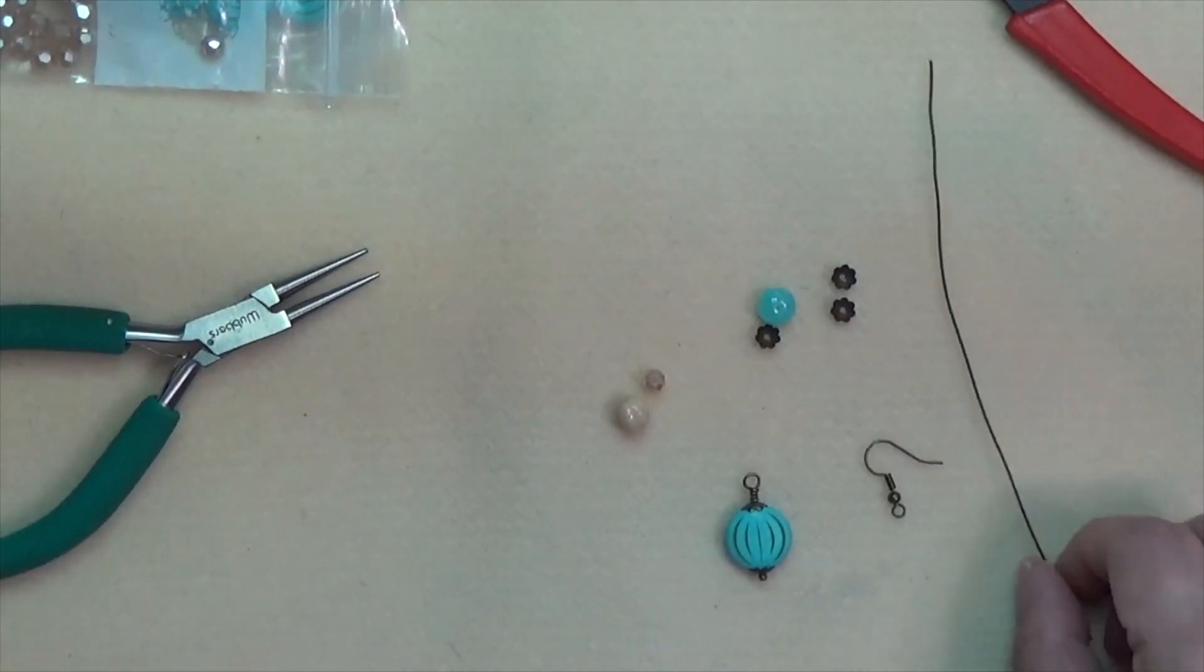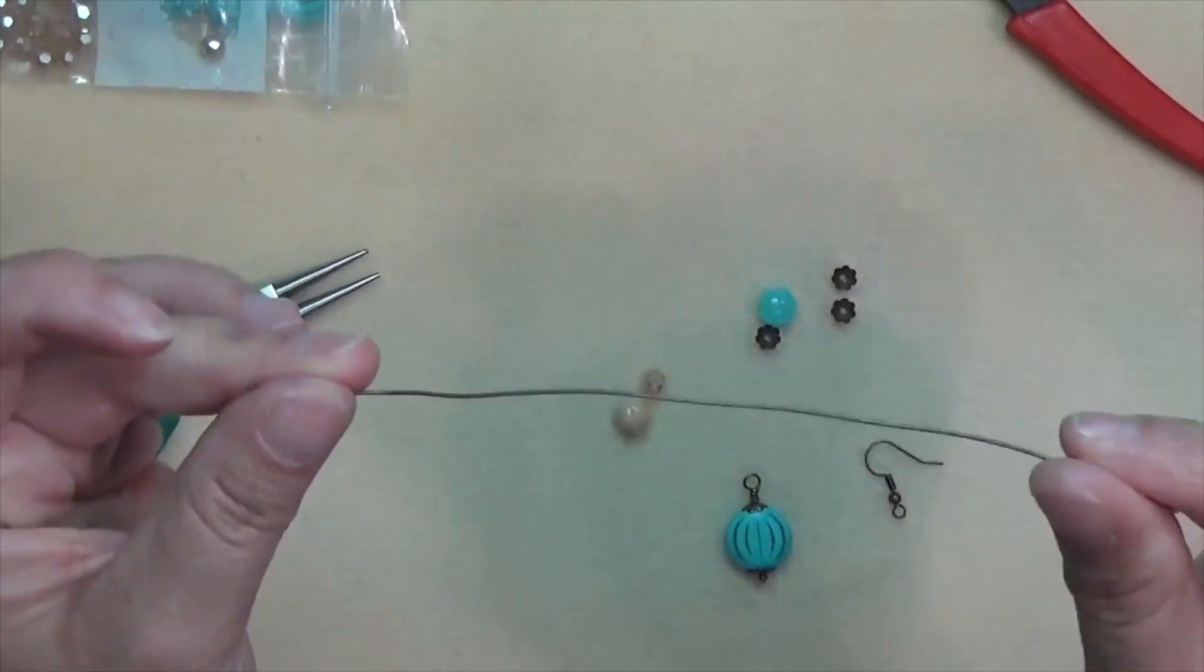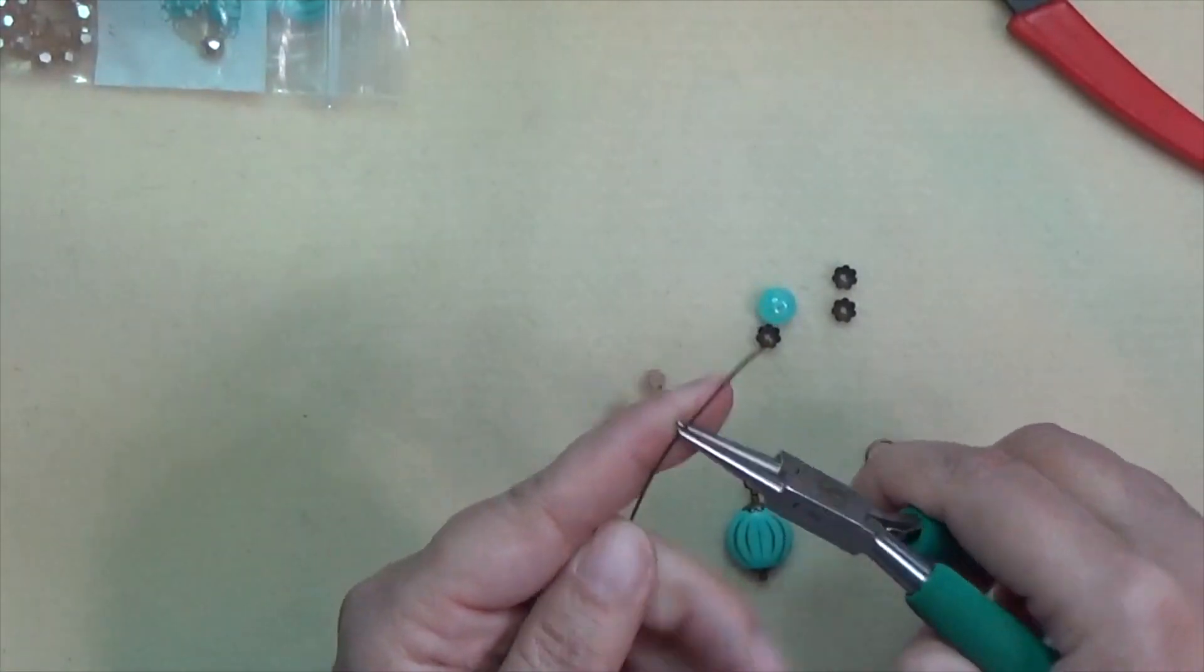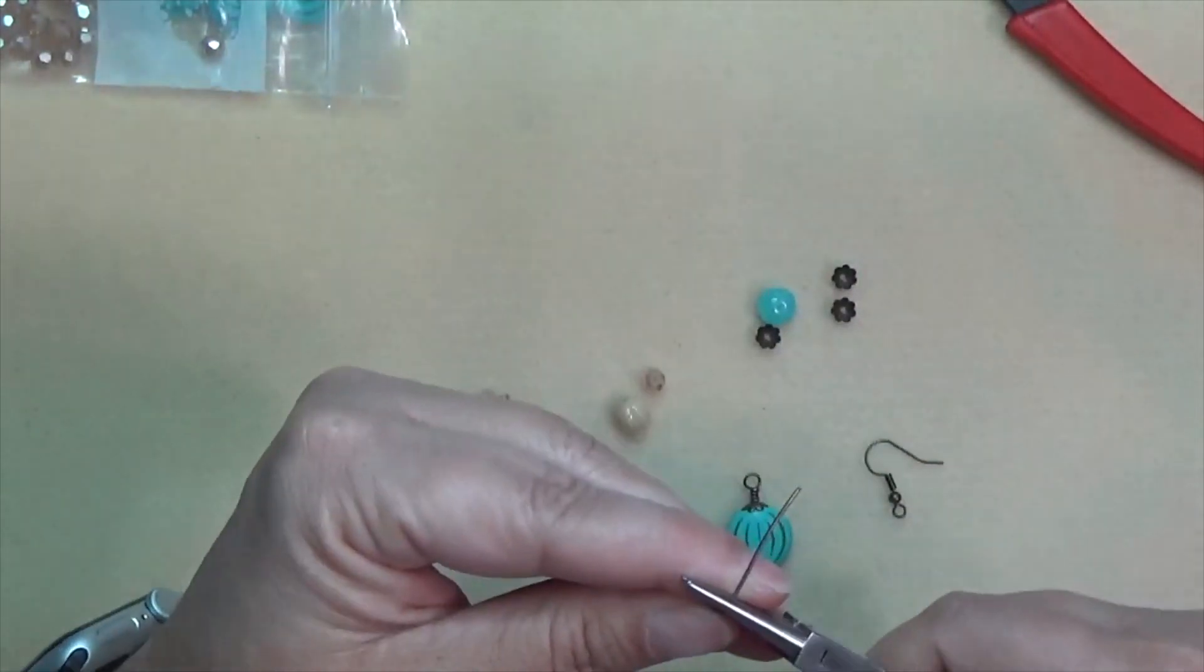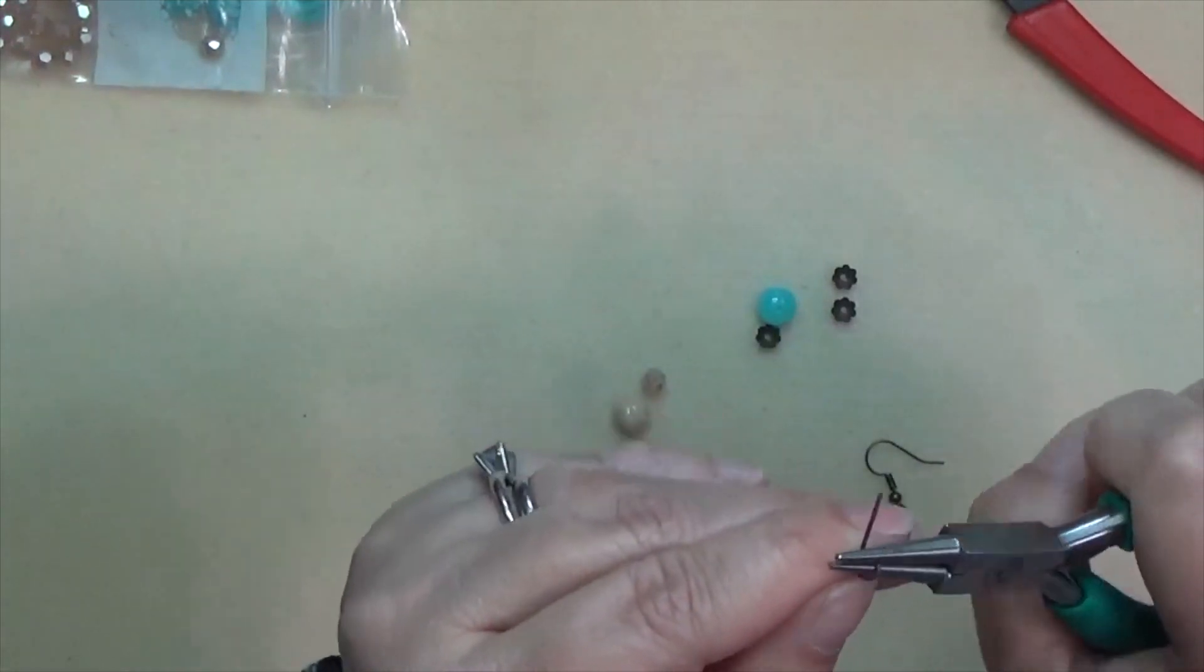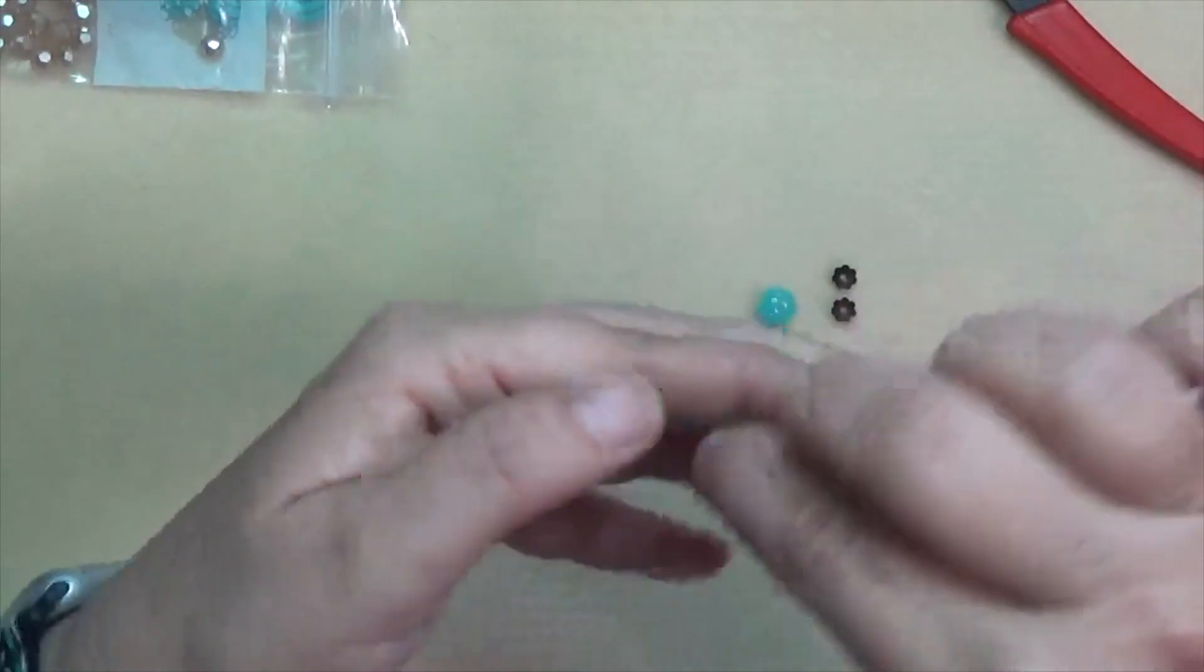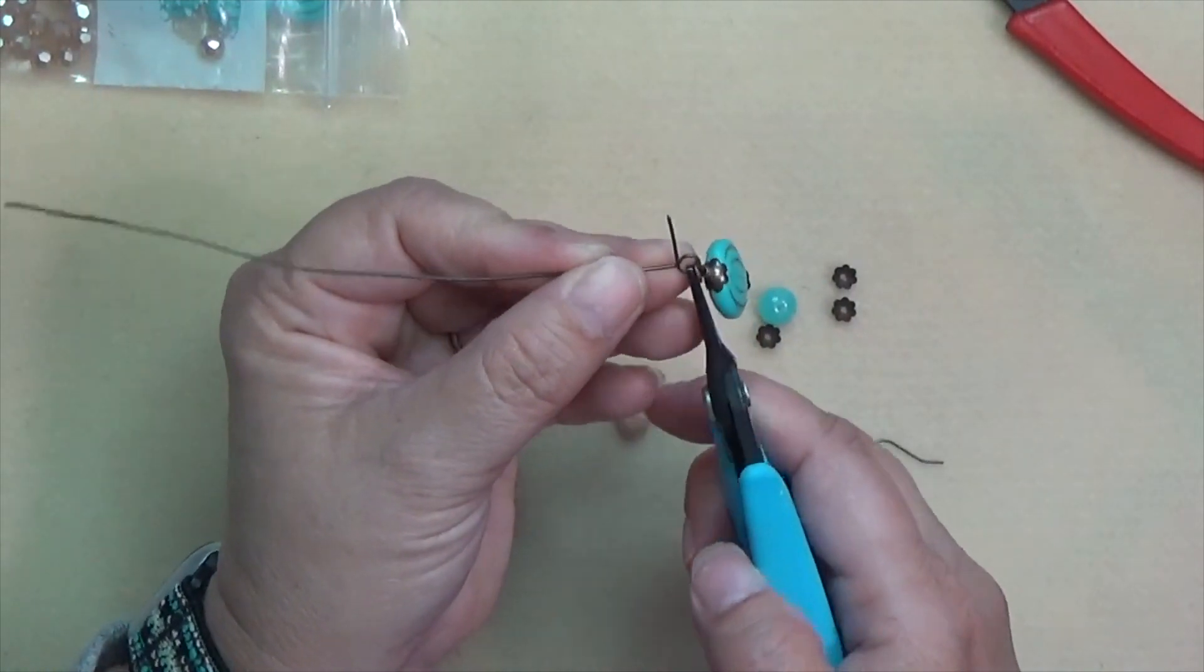The next thing is to make another wrapped loop. I have some antiqued brass wire - this is brass wire from the hardware store that I have darkened and sealed. Again, I'll have a link to that up there. I'm going to make a wrapped loop on this wire, so I will bend it, make my loop up and over and around. Before I close that loop I'm going to go ahead and put it on the loop of that other dangle we just made.